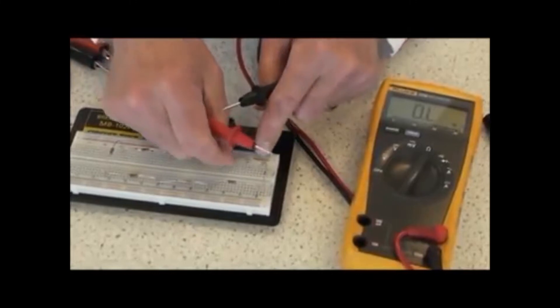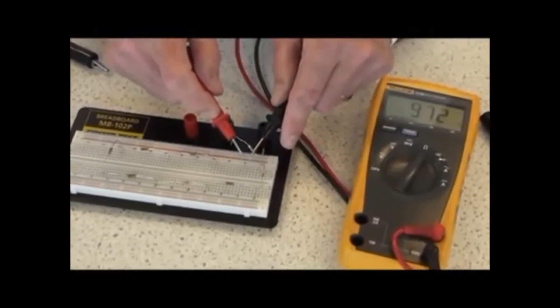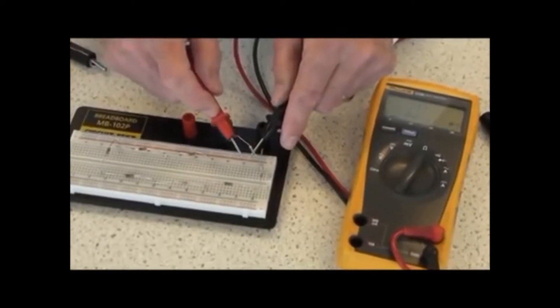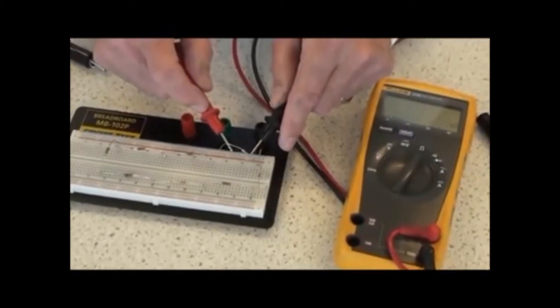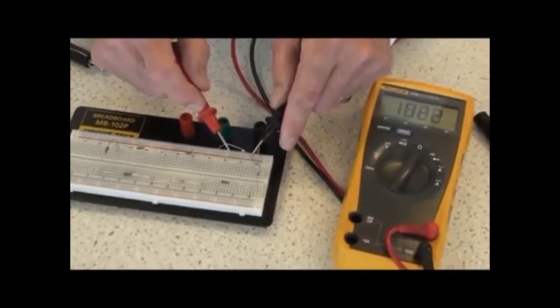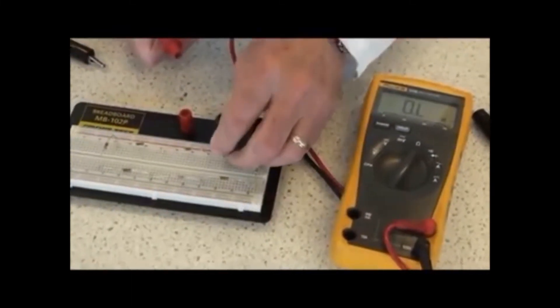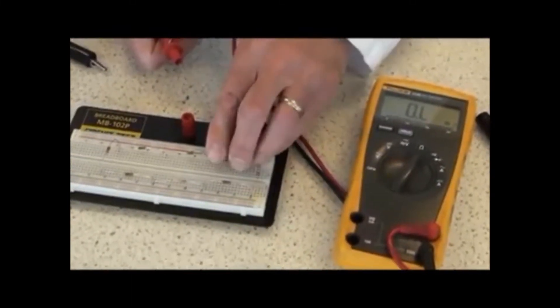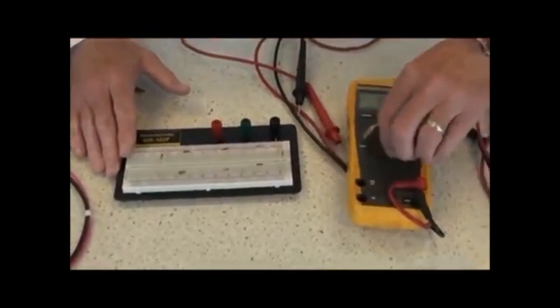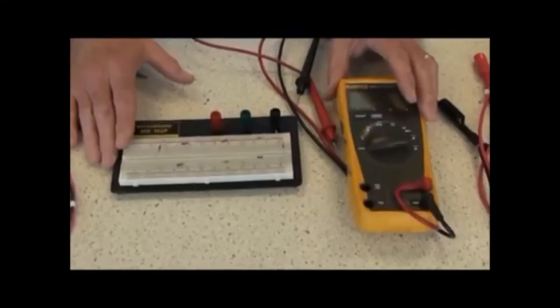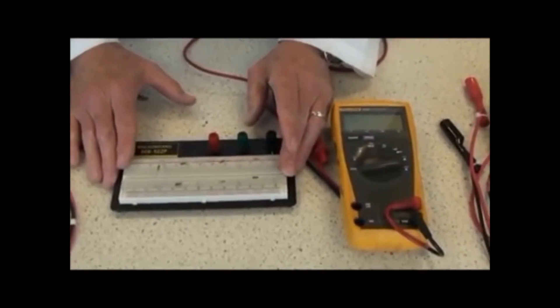Any particular value can be looked at, and the circuit returned to normal. That completes the resistance measurement procedure. I'd like to discuss measuring voltage.